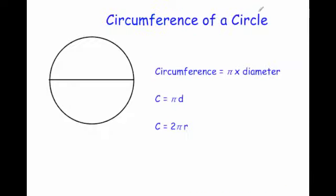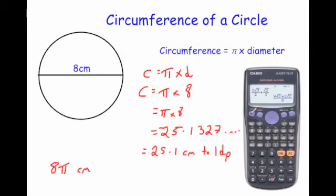The main thing to remember is circumference equals pi times diameter — there's even a song to help you remember that. And if you ever need to use the pi button on your Casio calculator, press shift and then the centre button to get pi.